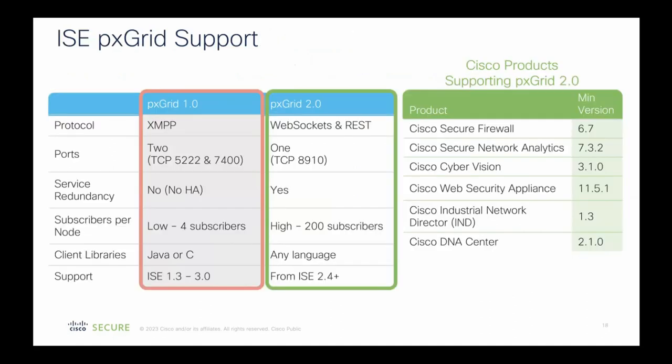PX Grid 1.0 has been sunsetted and deprecated as of ISE 3.0. Once you're running ISE 3.0 or 3.1 and above, you must use PX Grid 2.0. PX Grid 2.0 has actually been available since ISE 2.4, giving several years for people to transition their implementations. It's based on WebSockets and REST APIs, which makes it much more scalable and based on open standards.